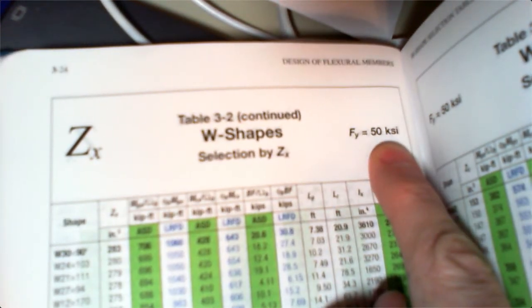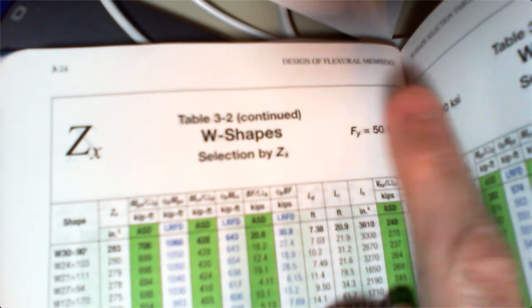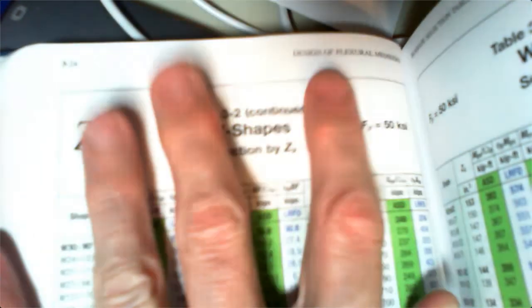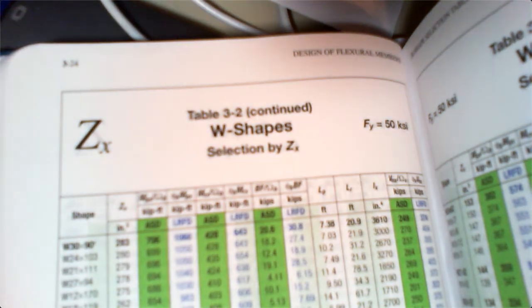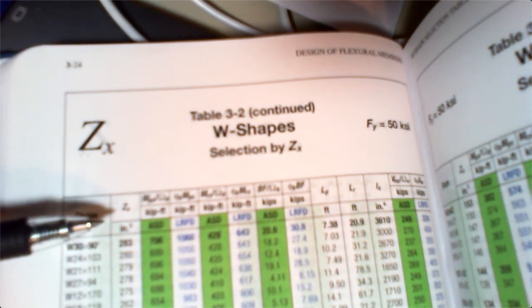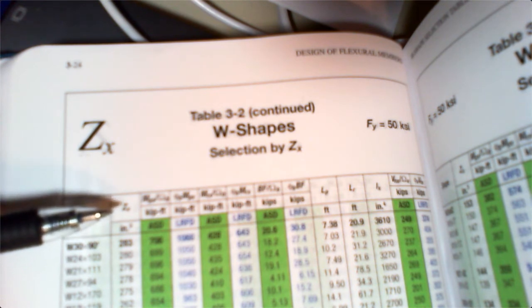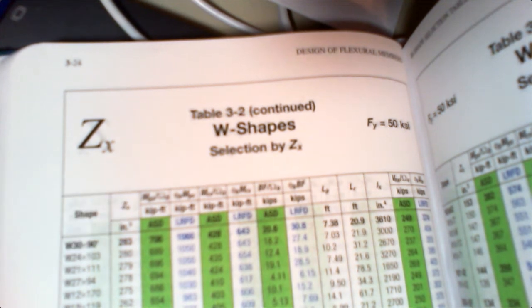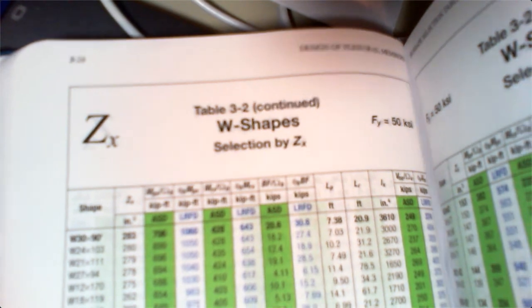I'm going to make sure I'm at 50 ksi. We're looking for Zx. Now remember, this table has a whole lot of data values that are really useful for 50 ksi, but the problem is our particular example is only 36, so this table technically doesn't work for us. But what does work for us, independent of Fy, is this one column: Zx.